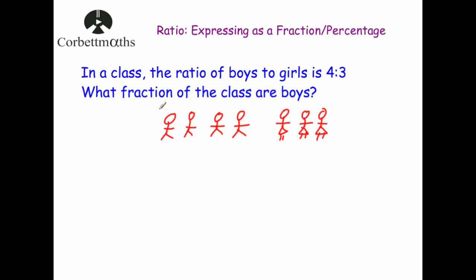As you can see the picture really helps when writing as a fraction. We've drawn seven students — obviously there might not be exactly seven, it could be fourteen, twenty-one, etc. — but in its simplest form for every four boys there's three girls. What fraction of the class are boys? Out of seven there are four boys, so it's four sevenths. You can also just add the ratio numbers together: four plus three is seven, and four of them are boys, so four sevenths. If asked about girls it would be three sevenths.